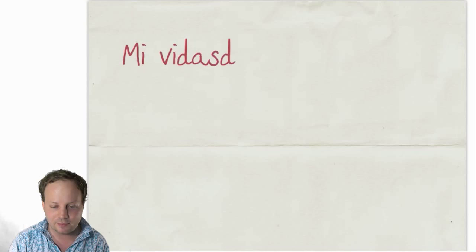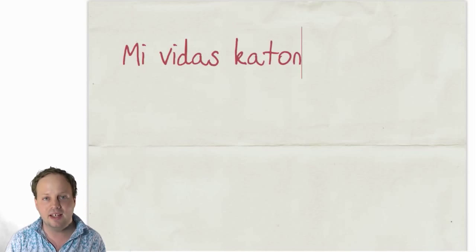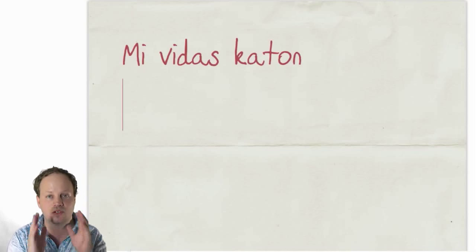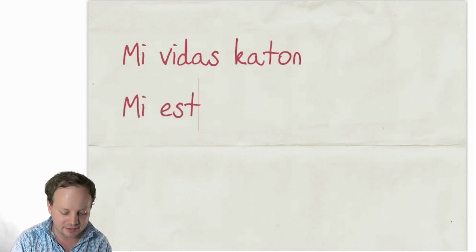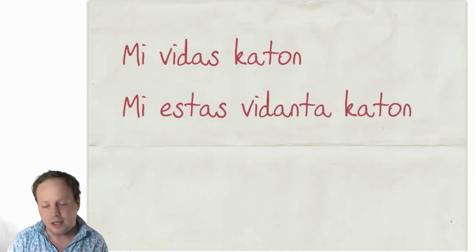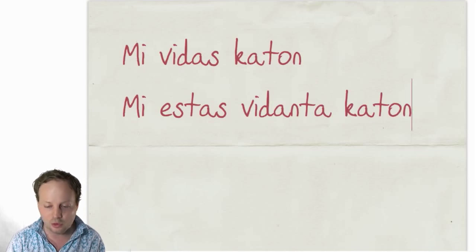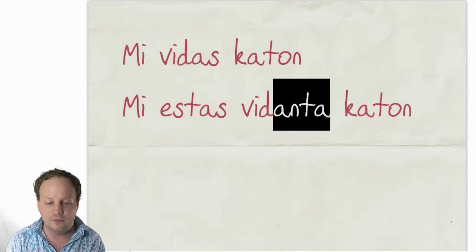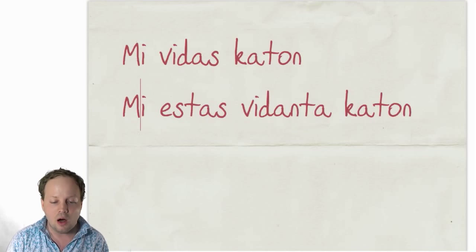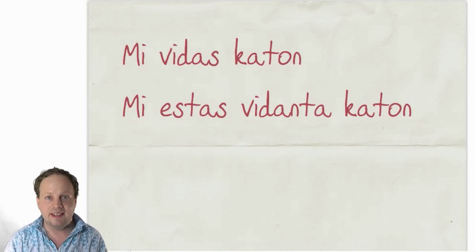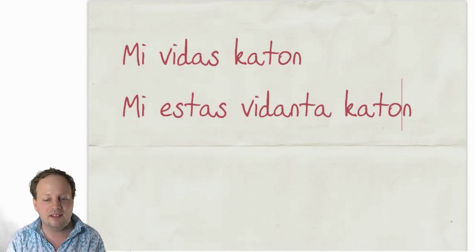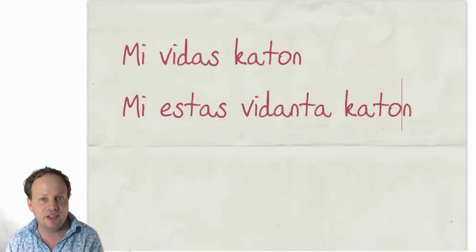As I said, you could say the basic sentence meaning 'I see a cat' or 'I am seeing a cat.' But if you wanted to specify 'I am seeing a cat,' you'd say MI ESTAS VIDANTA KATON. Kato is still in the accusative case because you're using this as a compound verb form. So ESTAS means 'am/is,' and VIDANTA means 'seeing.' So MI ESTAS VIDANTA KATON means 'I am seeing a cat.'